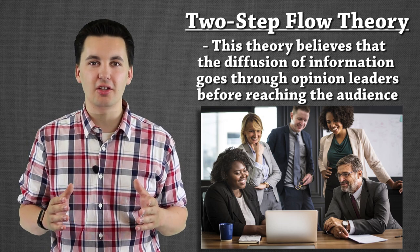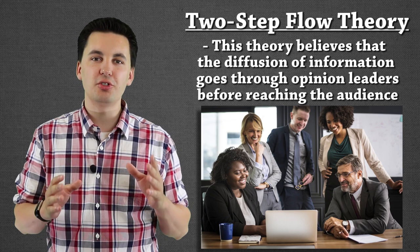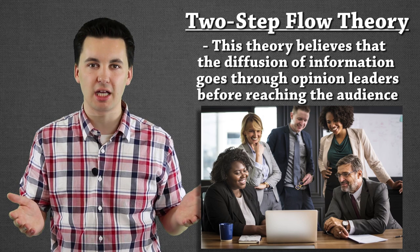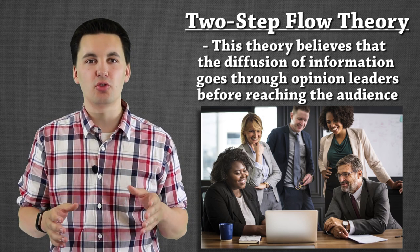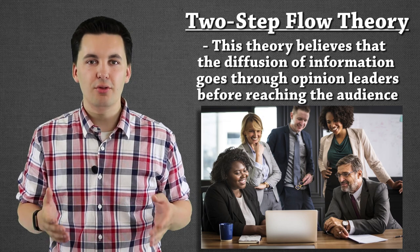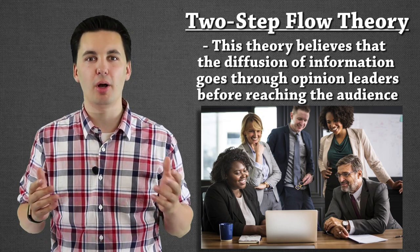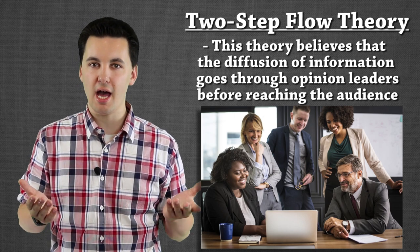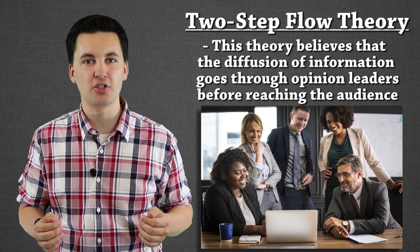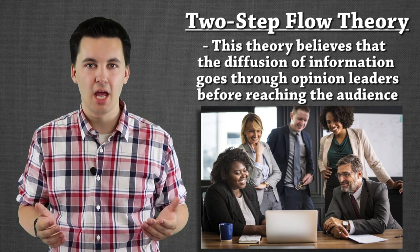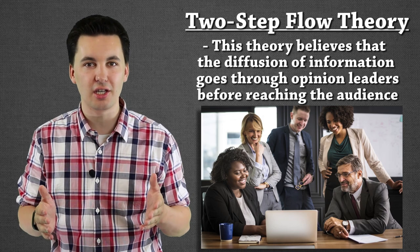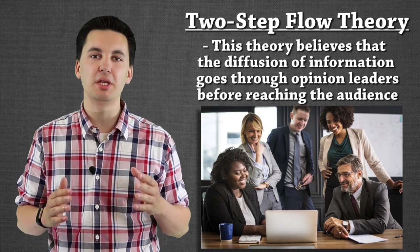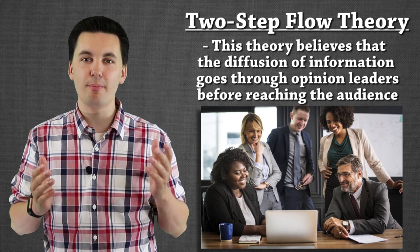The two-step flow theory believes it's a little bit more complicated of a relationship. The mass media is not just the only one that is disseminating information to the masses. You have the mass media and then you have opinion leaders — people in society that follow the news, politics, or what's going on in the world very closely. They decide what's important and spread that information, and people listen because they trust them. This is becoming even more prominent in the day of fake news and mistrust of the media, with more people getting their news from people they trust and fewer trusting the mass media.